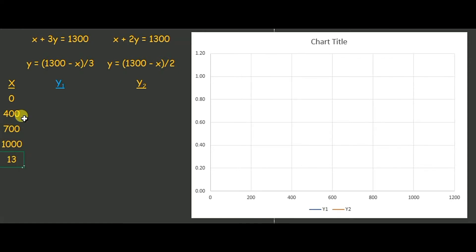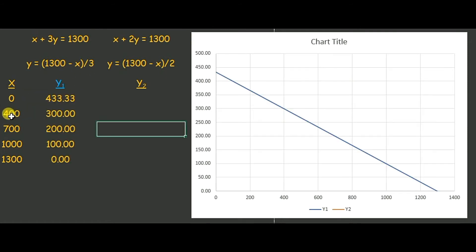So this y1 would be, if I replace this x with 0, this would be 1300 over 3. If I replace this x with 400, this would be 900 over 3. So likewise, I have this line here.